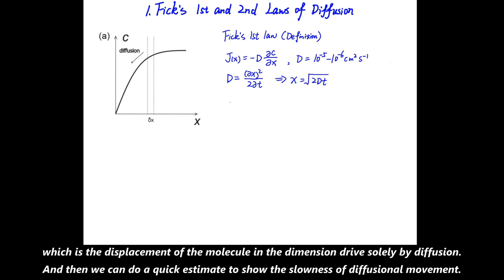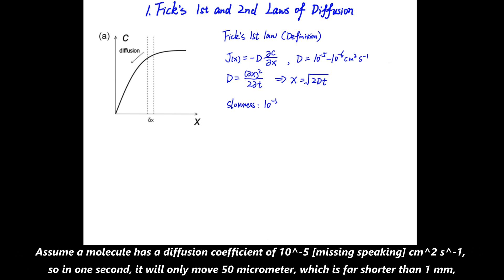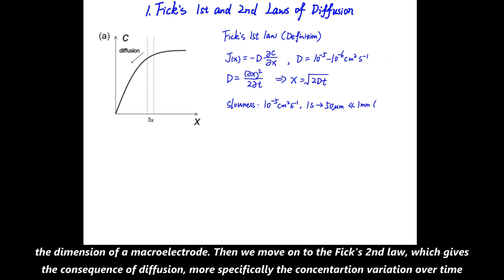And then we can do a quick estimate to show the slowness of diffusional movement. Assume a molecule has a diffusion coefficient of 10^-5 cm²/s, so in one second it will only move 50 micrometers, which is far shorter than one millimeter, the dimension of a macroelectrode.